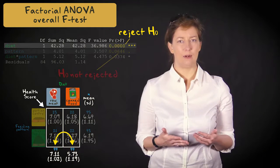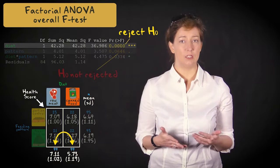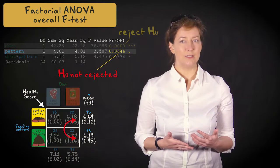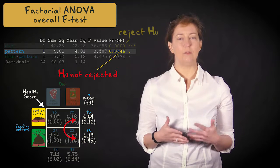When we ignore feeding pattern, the difference between raw meat and canned food is large enough to be significant, with cats fed on raw meat receiving a higher mean health score. When we ignore diet, the difference between portion control and free feeding is not quite large enough to be significant.